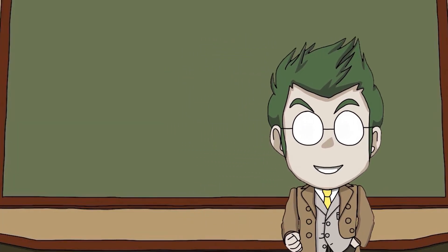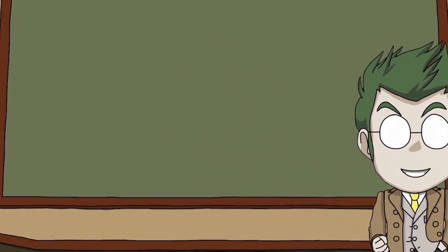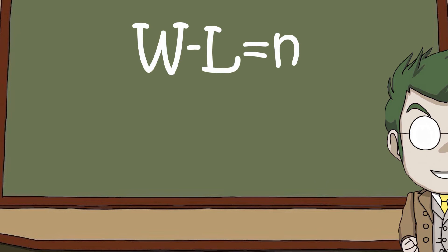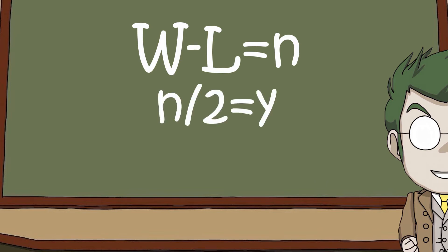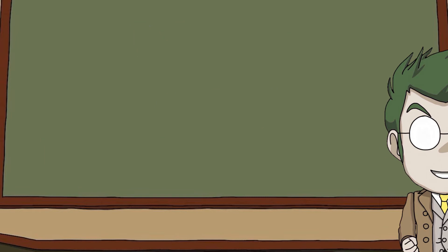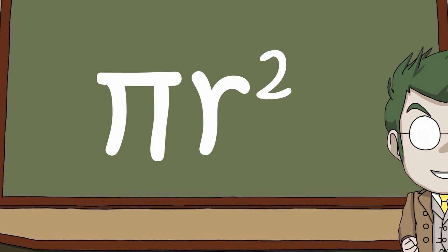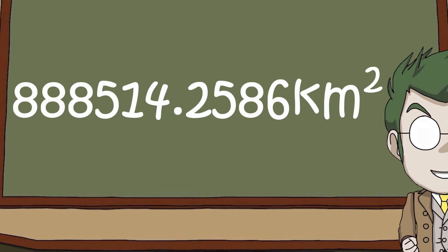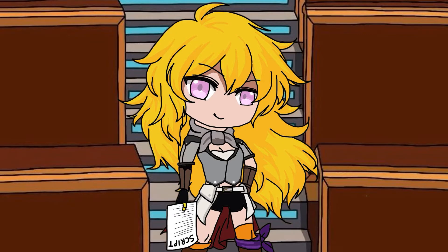But now we need to work out the weight of the buildings and people. To get a rough area of the buildings and people, I'm going to minus Atlas's length from Atlas's width, divide the number by 2, minus that number from the width, giving us a diameter of a circle with about the same building area as Atlas. And using good old Pi R squared, we get an area of 888,514.2586 kilometers squared — that's an area of over 129,000 football pitches.